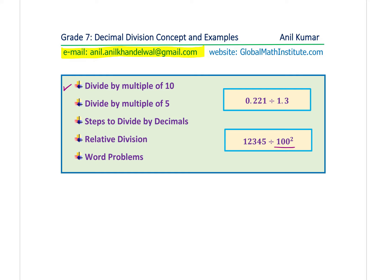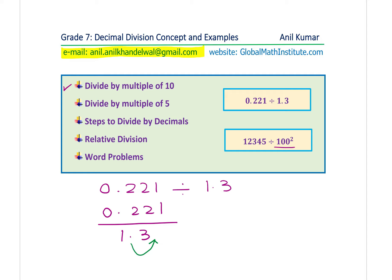Here we have two different questions. For example, 0.221 divided by 1.3 can also be written as 0.221 over 1.3. What we are going to do is remove the decimal from the denominator. Since we have 3 in the tenths place, we multiply both numerator and denominator by 10, which moves the decimal one position in the numerator as well, giving us 2.21 over 13.